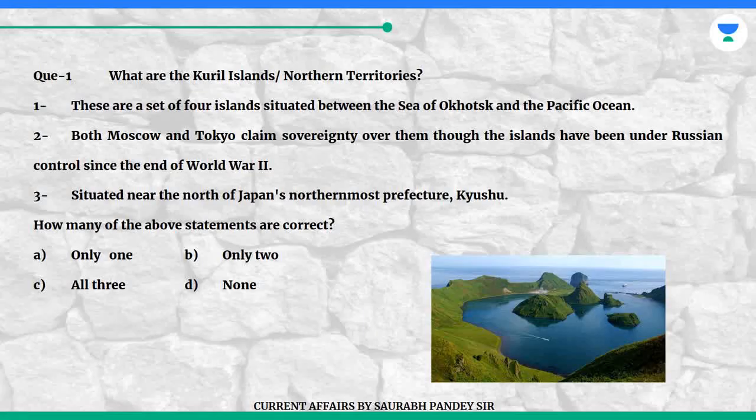What are the Kuril Islands / Northern Territories? Statement 1: These are a set of four islands situated between the Sea of Okhotsk and the Pacific Ocean. Statement 2: Both Moscow and Tokyo claim sovereignty over them, though the islands have been under Russian control since the end of World War II. Statement 3: Situated near the north of Japan's northernmost prefecture, Kyushu.